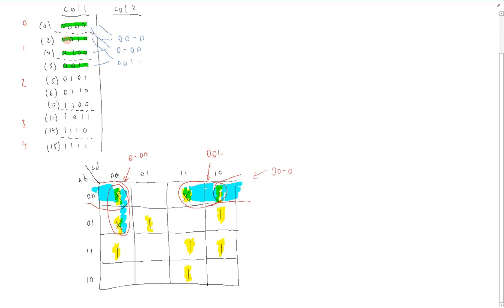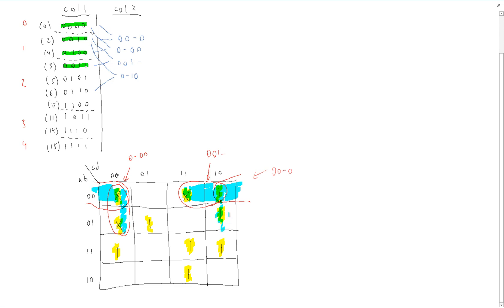We keep going. 0010 and 0101 differ by more than one bit, so we skip. But 0110 and 0010 differ by just one, giving us 0-10. And again, there is a corresponding block for that on the K-map — 0010 clearly expands down to 0110, giving this encirclement corresponding to 0-10. All we're doing is expanding our terms by one in the K-map wherever that's possible.